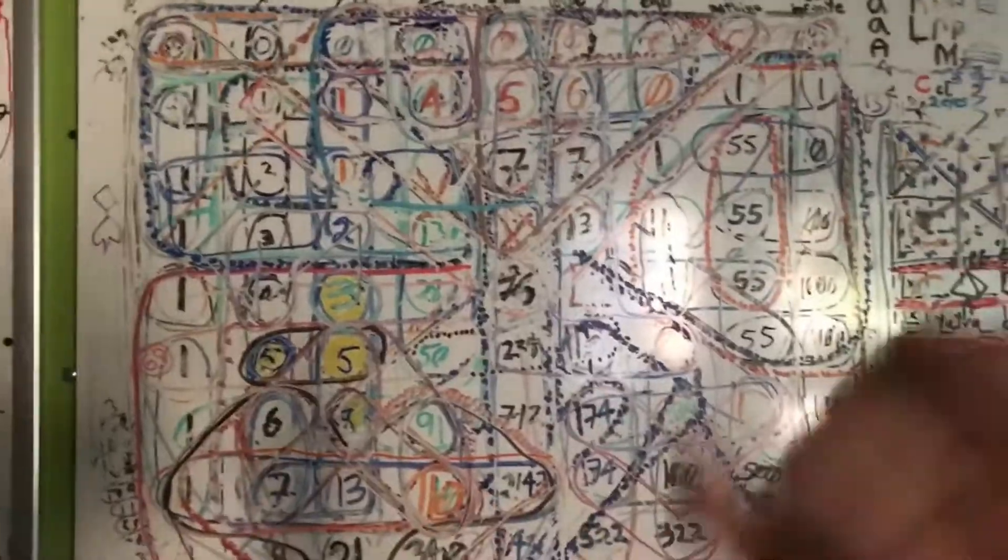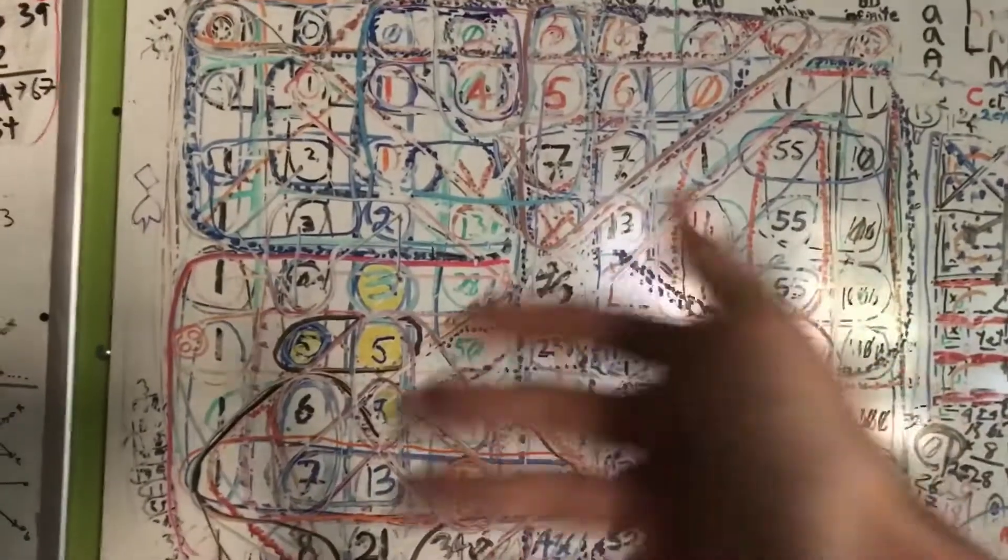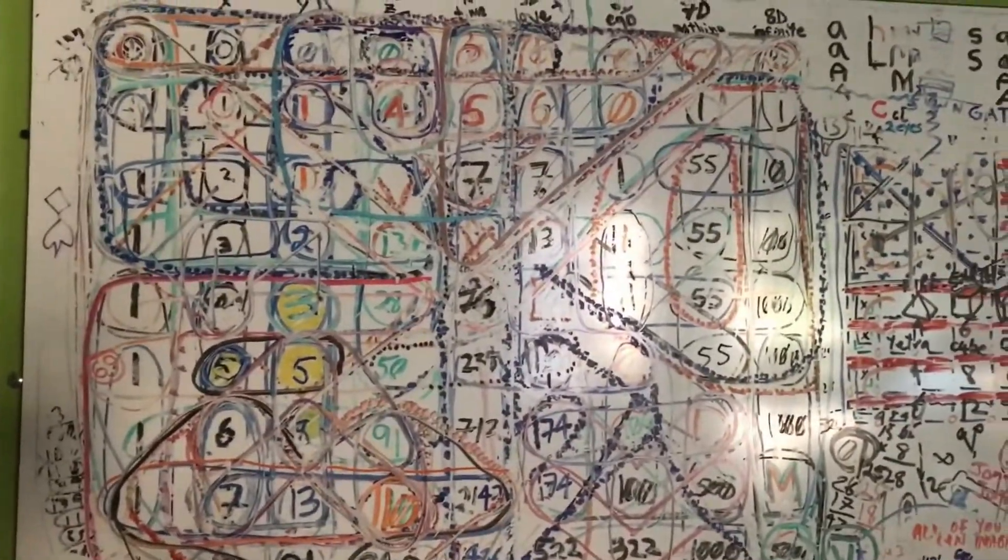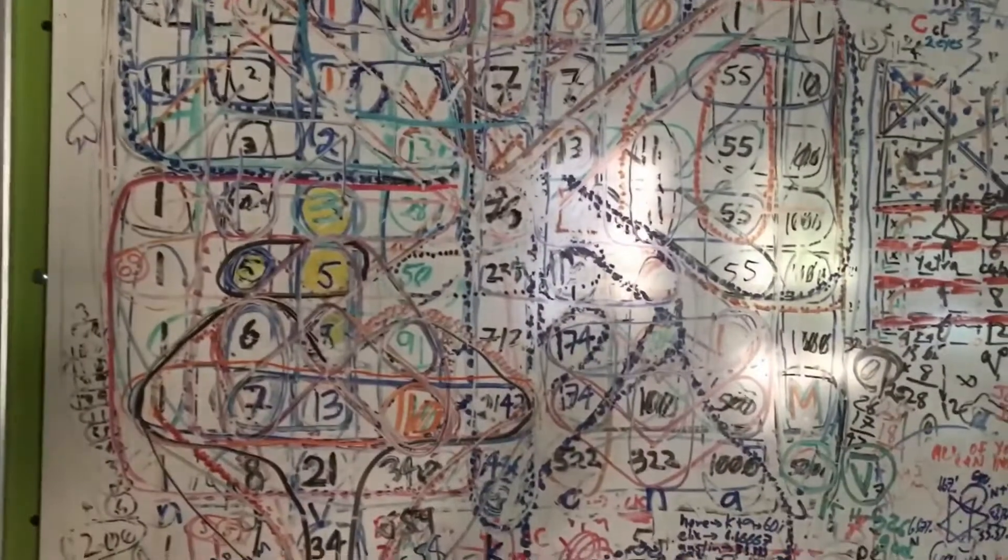And then the last thing I want to talk about is the 2, 2, 2 and the 3, 3, 3. So I never talked about the 2, 2, 2 and the 3, 3, 3 times, you know, 3 and 2 respectively. I didn't make... like the 6x6 I made, but I never made the other stuff.